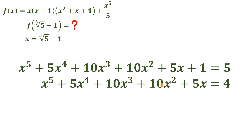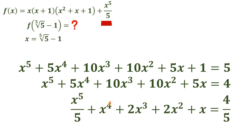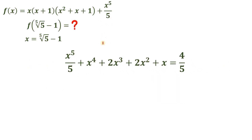Why divide by 5? Because of the term x to the 5th power over 5 in our f of x. Dividing all terms by 5 gives us: x to the 5th power over 5 plus x to the 4th power plus 2x cubed plus 2x squared plus x equals 4 over 5. We can see x to the 5th power over 5 appears here, matching a term in f of x. Now let's focus on the remaining terms and factor out x.